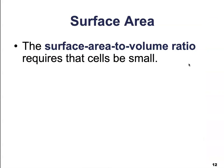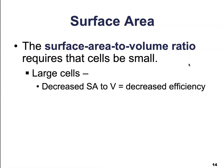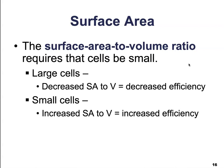To put that into words: the surface area to volume ratio requires that cells be small. The smaller they are, the greater the surface area to volume ratio and the greater efficiency that cell will have. Large cells have a decreased surface area to volume ratio, meaning decreased efficiency. Small cells have an increased surface area to volume ratio and therefore increased efficiency.